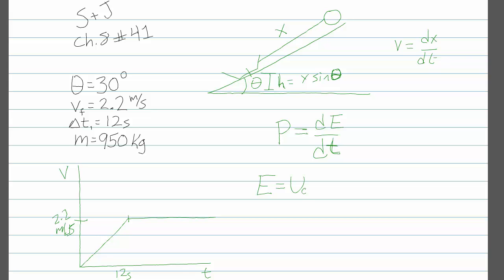We know that the energy of the cart is going to be given by its gravitational potential energy, plus its kinetic energy. And of course the gravitational potential energy is just mgh, which in this case is mgx sine theta.